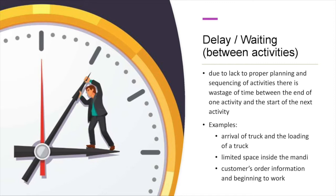The first example is the arrival of a truck and the loading of the truck. If a truck is scheduled to arrive at 10 o'clock to take the harvested produce, but at that time the labourers are not available to load the truck — and the labourers are coming after lunch, that is after 2 pm or 3 pm — this is a delay activity. Such types of delays need to be controlled.